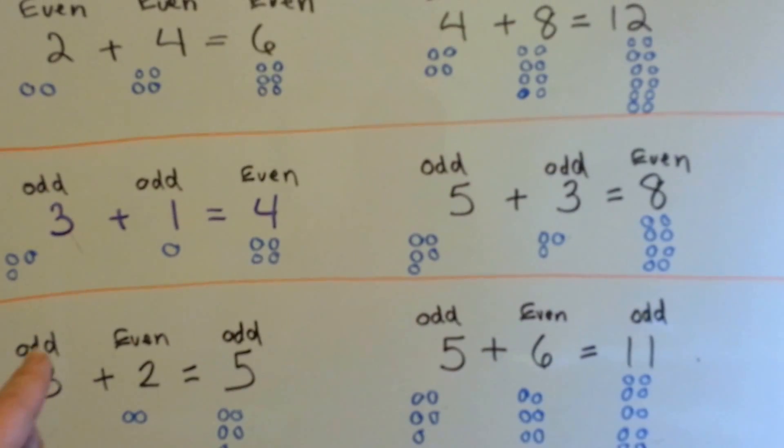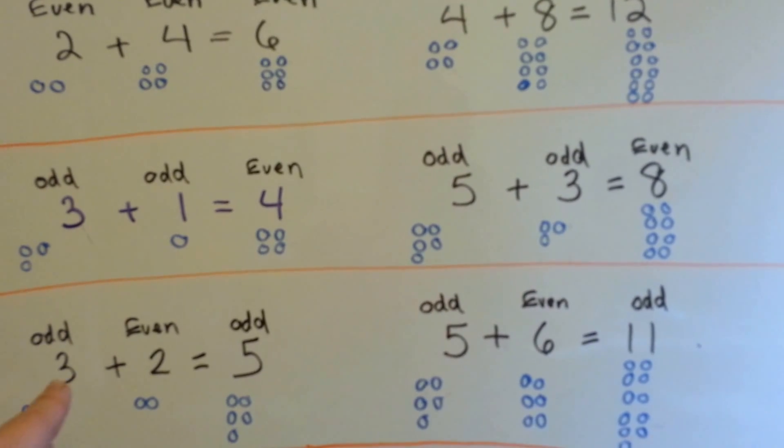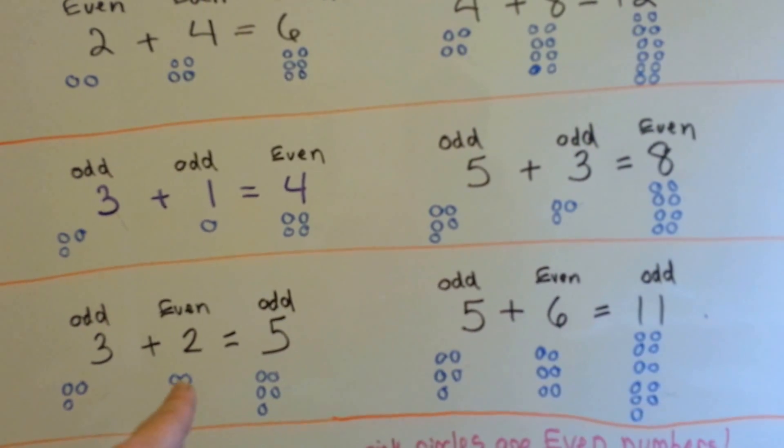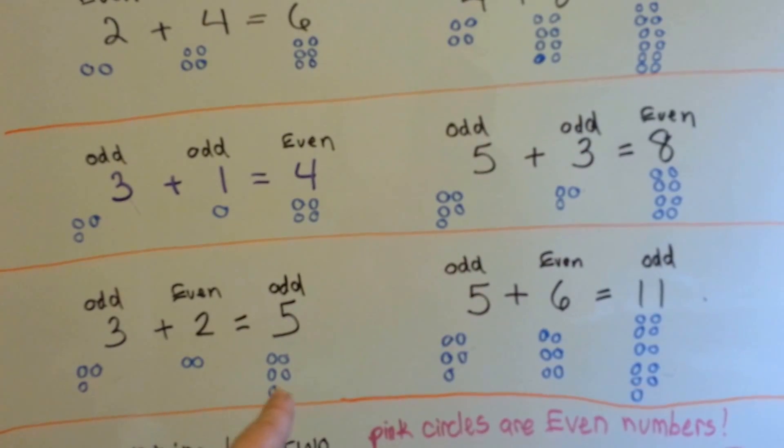Now what happens if we add an odd and an even? 3, that one doesn't have a friend, plus 2, that one does have friends, equals an odd number. 5 is an odd number. See how this one's left over?